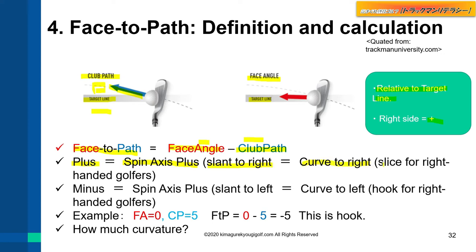That means a slice for right-handed golfers. When this value is minus, it's the opposite — it's a hook shot. For example, in this picture, the face angle is zero and the club path is five, so face-to-path is zero minus five, which equals minus five. That's a hook.